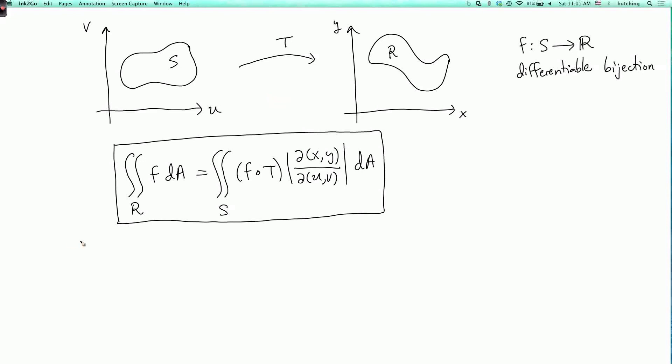An example of how this works is changing to polar coordinates. When we change to polar coordinates, we want to replace the X and Y coordinates with the polar coordinates R and theta. So let's say we take U to equal R and V to equal theta. What happens when we change to the R and theta coordinates?